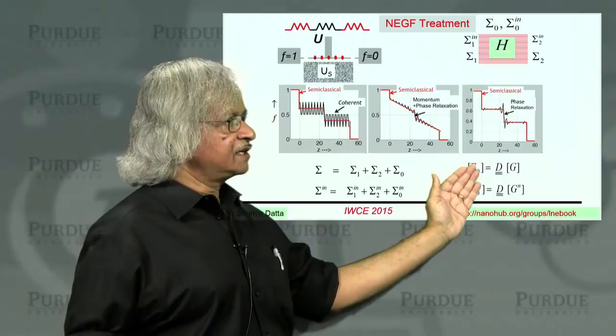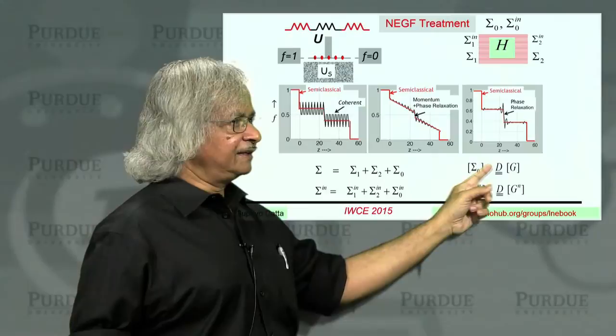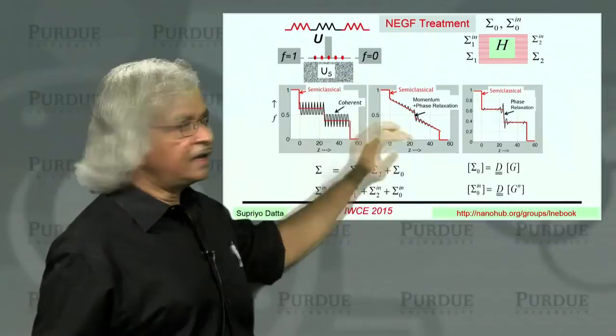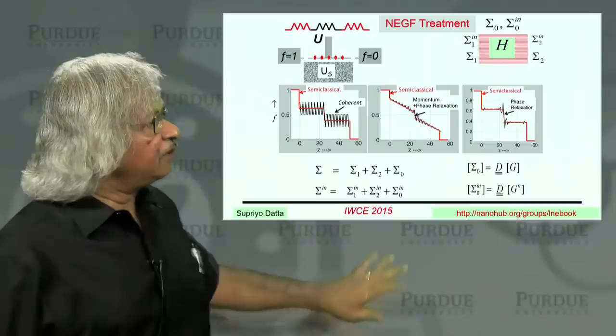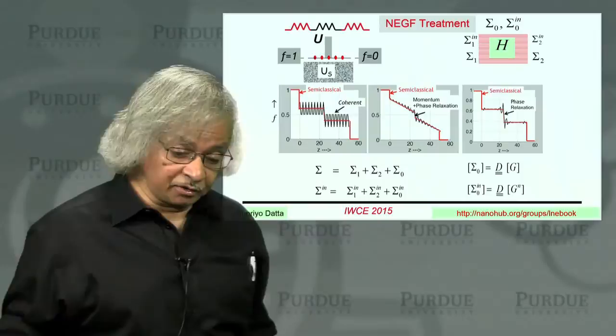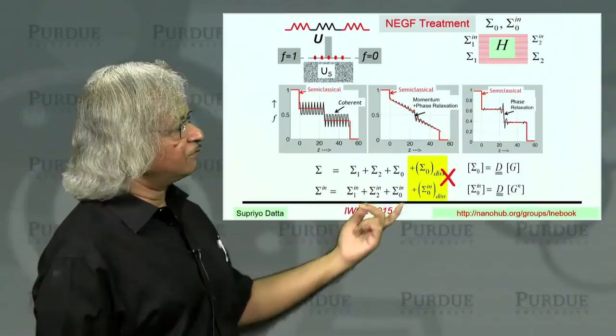And all this comes simply by choosing your sigma zeros. You see the prescription is sigma zero is proportional to G. And there is this tensor in between which connects them. This tensor physically represents the RMS value of this scattering potential. And this is a tensor. And if you choose it correctly, the structure of this tensor, you can get phase relaxation. Or you can get phase and momentum relaxation. Or you could get spin relaxation, for example.